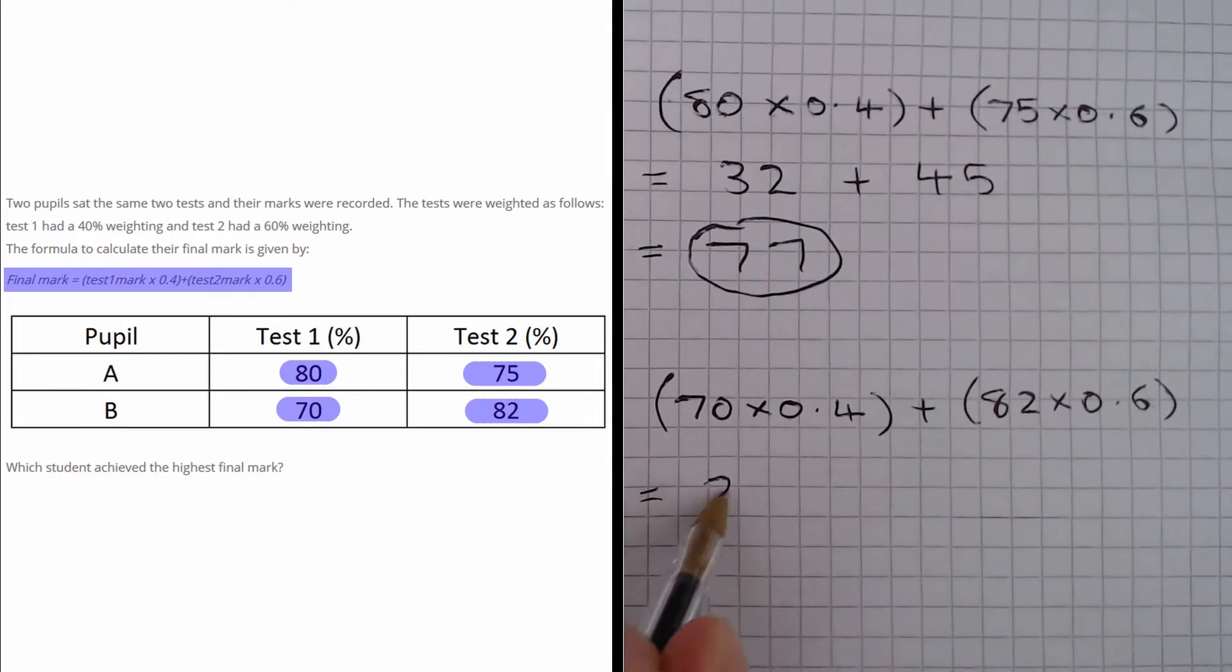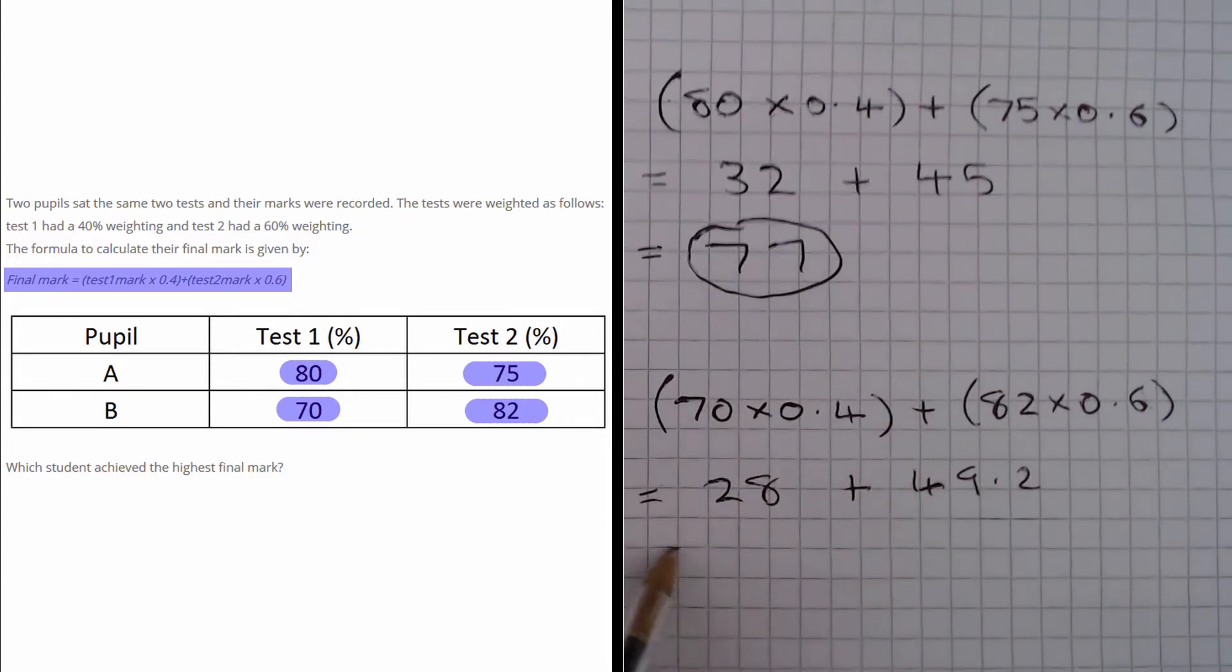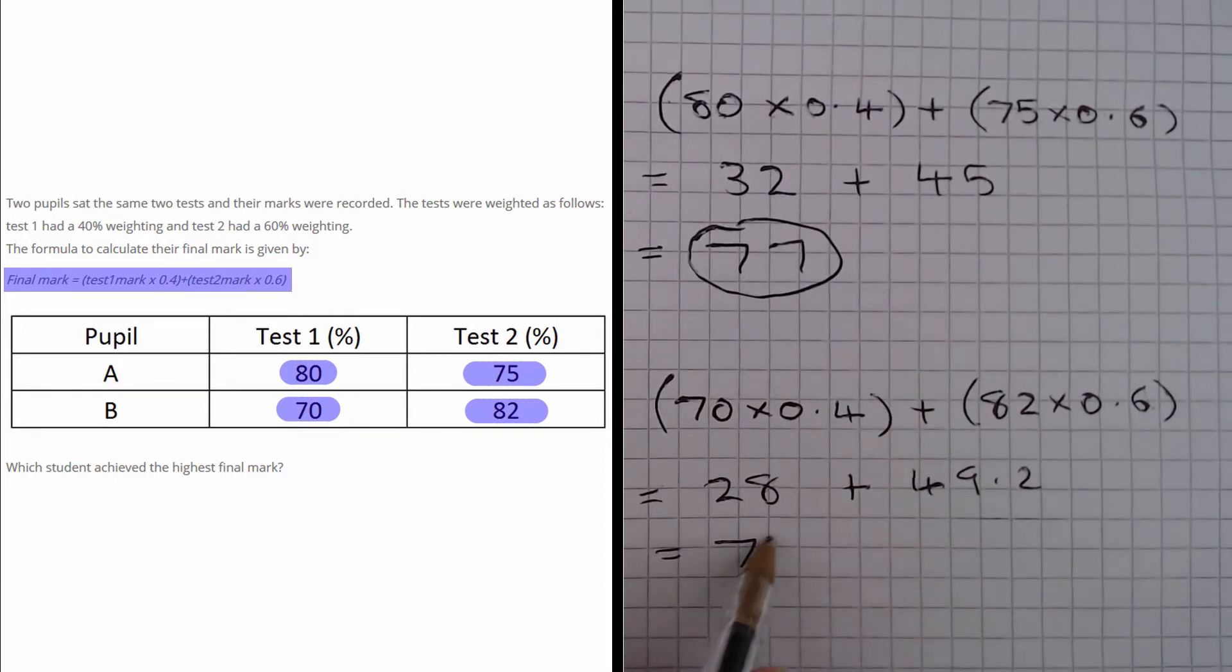This first bracket yields 28 and this second bracket yields 49.2. When we add these two together we get 77.2.